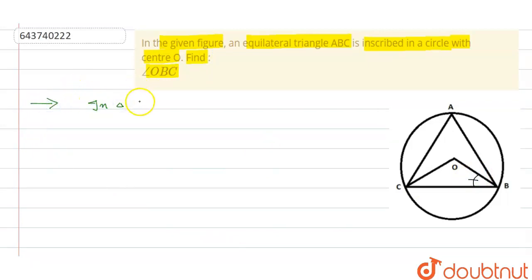Now, in triangle OBC, OB is equals to OC because they are the radius of same circle. Therefore, we can say that angle OBC is equals to angle OCB, and this is our first equation.